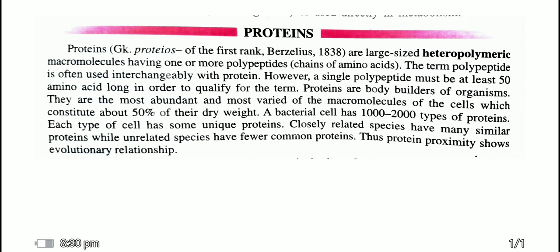To summarize: Number 1, proteins are made up of amino acids. Number 2, proteins are heteropolymeric macromolecules. Number 3, they are made up of one or more polypeptides. Number 4, one polypeptide consists of a minimum of 50 amino acids. Number 5, proteins are body builders of organisms. A bacterial cell contains 1,000 to 2,000 types of proteins. Every cell has its unique protein, related species have similar proteins, and unrelated species have few common proteins.